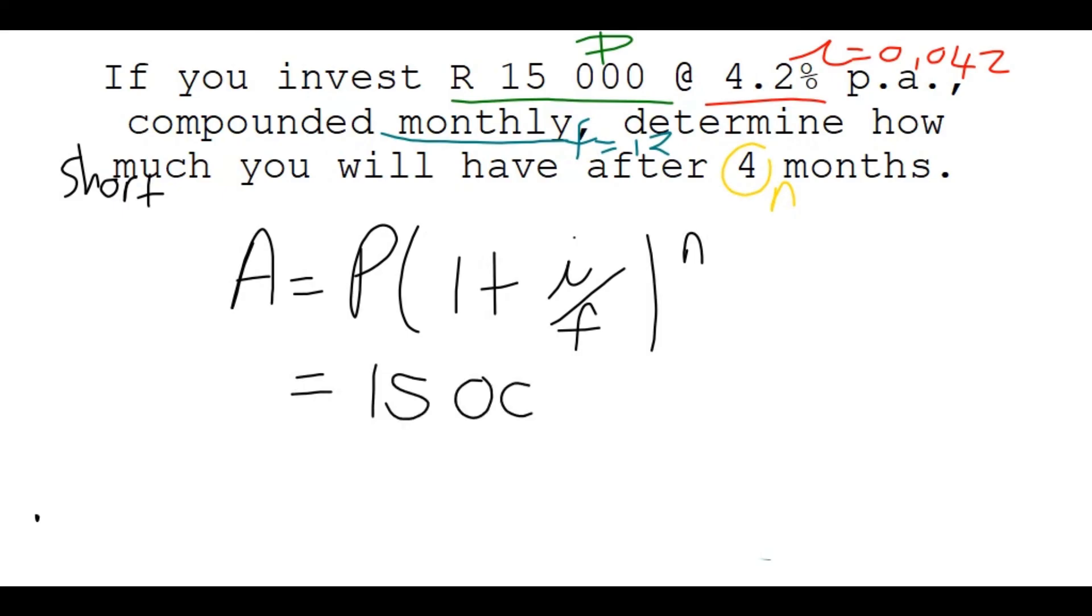It's only 15,000 Rand that you're investing, and the interest is 0.042. Frequency is 12, and N is only 4 times, instead of 4 times something. Work it out, put in your calculator just like that, and you'll see you'll get 15,211.11.